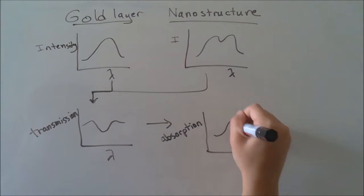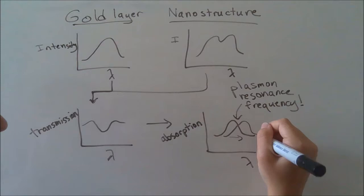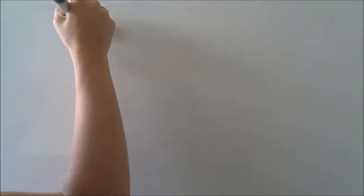This peak can be shifted in response to changes of the refractive index of the surrounding environment, which occurs, for example, when we cover the gold with a protective layer of photoresist.